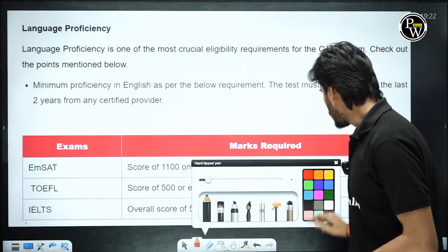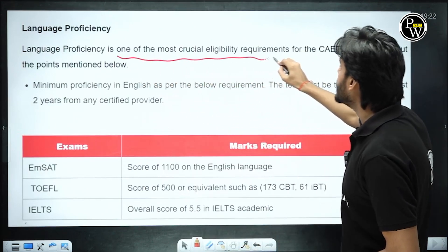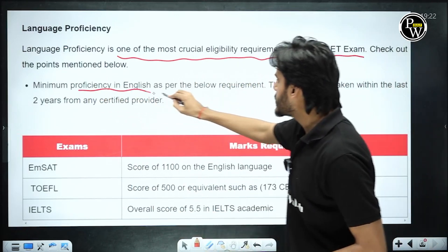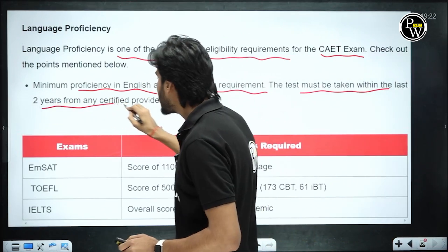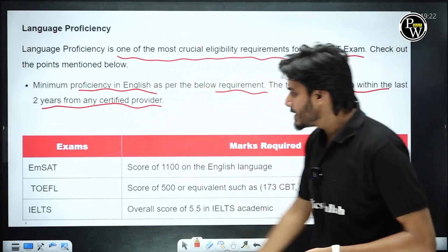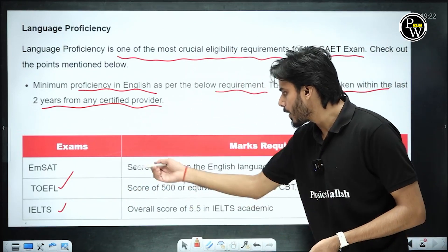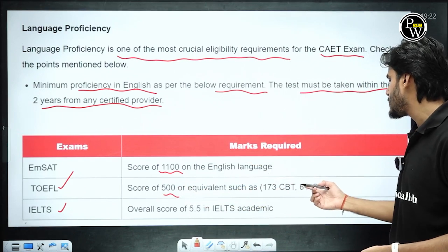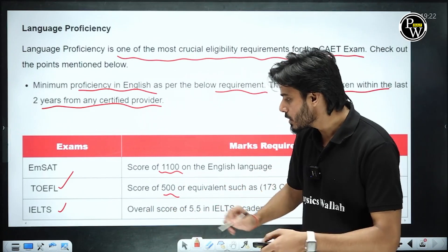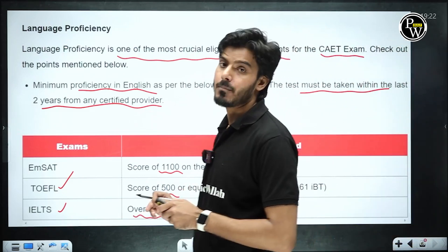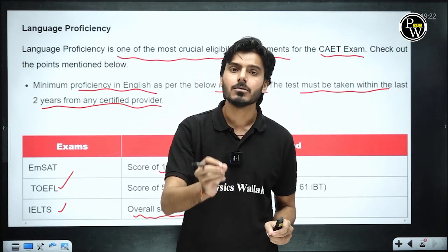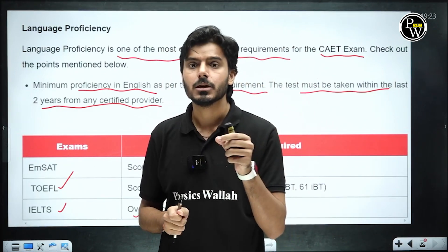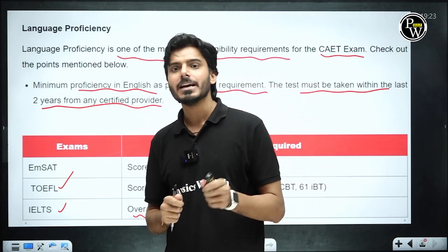The most crucial eligibility requirement is the English language proficiency test. Minimum proficiency in English is required, and the test must have been taken within the last two years from any certified provider. The certified providers are IELTS and TOEFL. For TOEFL, the required score is 500, or equivalents: 173 CBT or 61 IBT. For IELTS, the required overall score is 5.5. This is all the information you need for the CAET exam of 2025. If you have any questions, do comment and ask. Thank you so much — we'll meet again on the same channel. Bye.